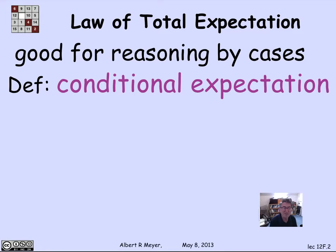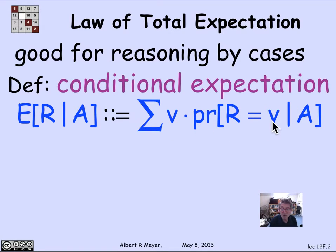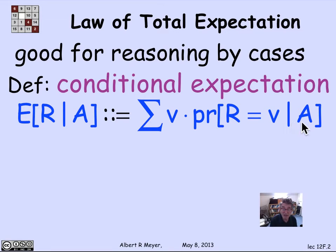It requires a definition of what's called conditional expectation. The expectation of a random variable r, given event a, is simply what you get by replacing the probability that r equals v by the probability that r equals v given a. So it's the sum over all the possible values that r might take of the probability that r takes that value given a.